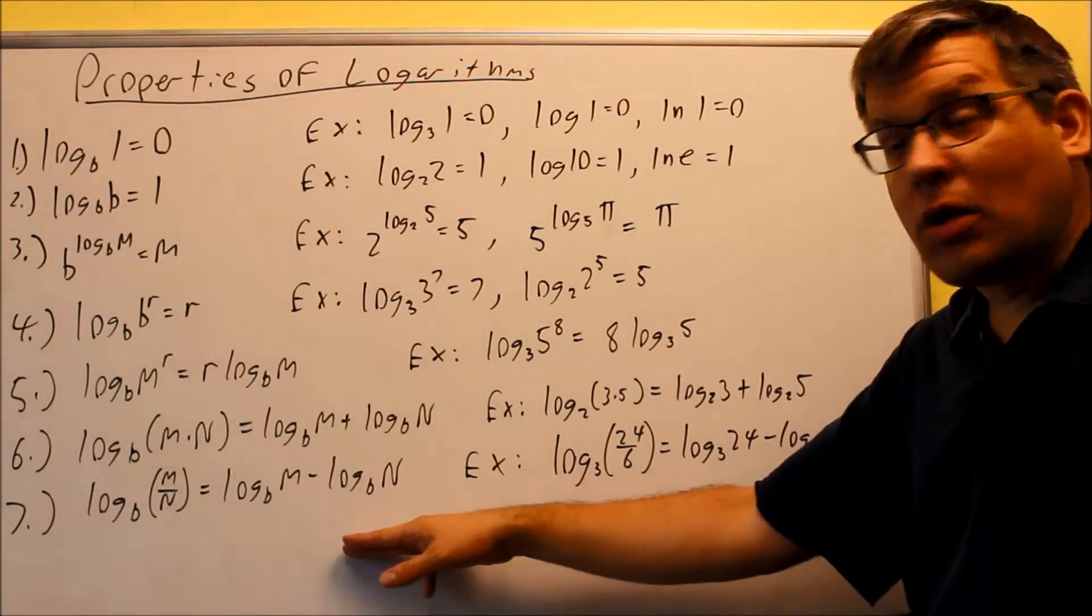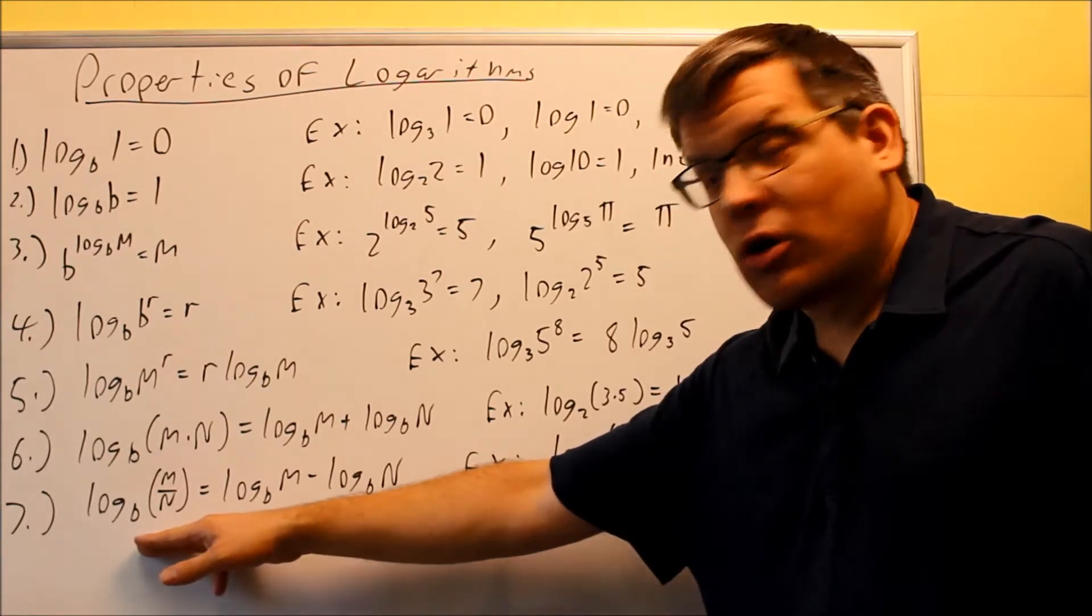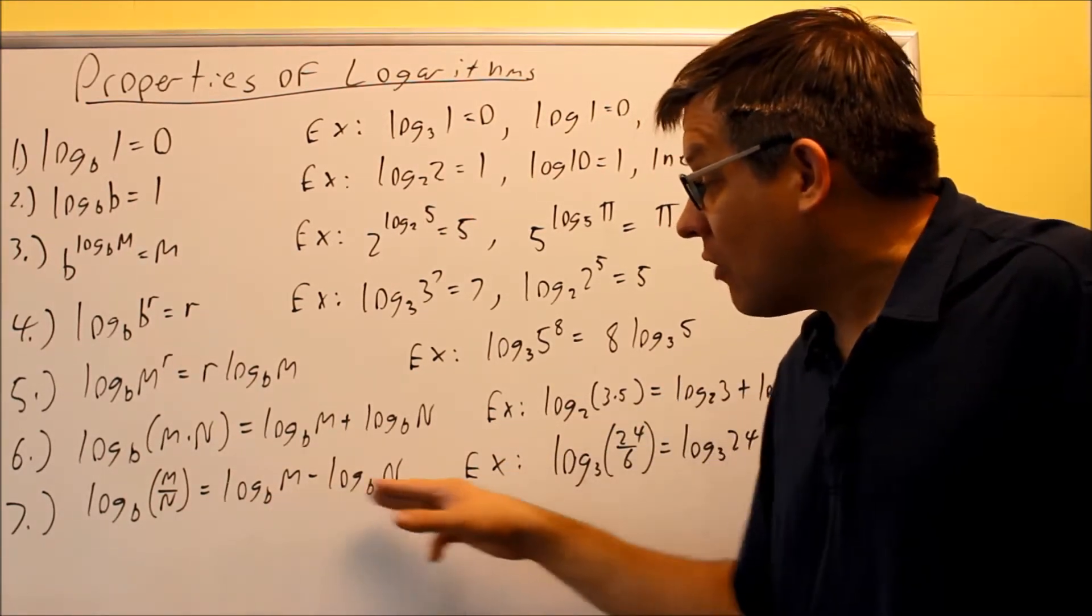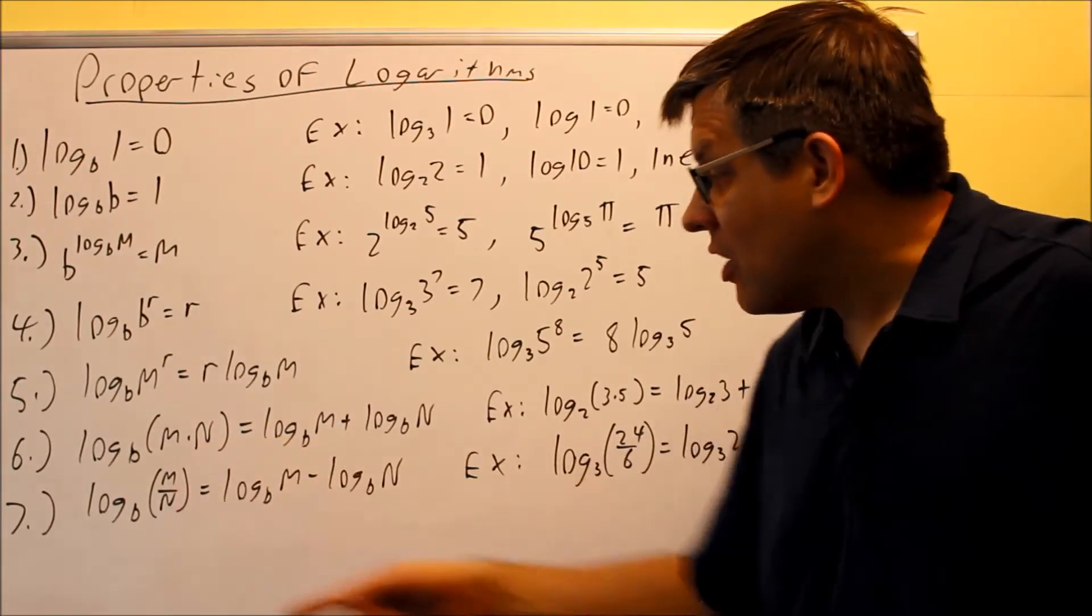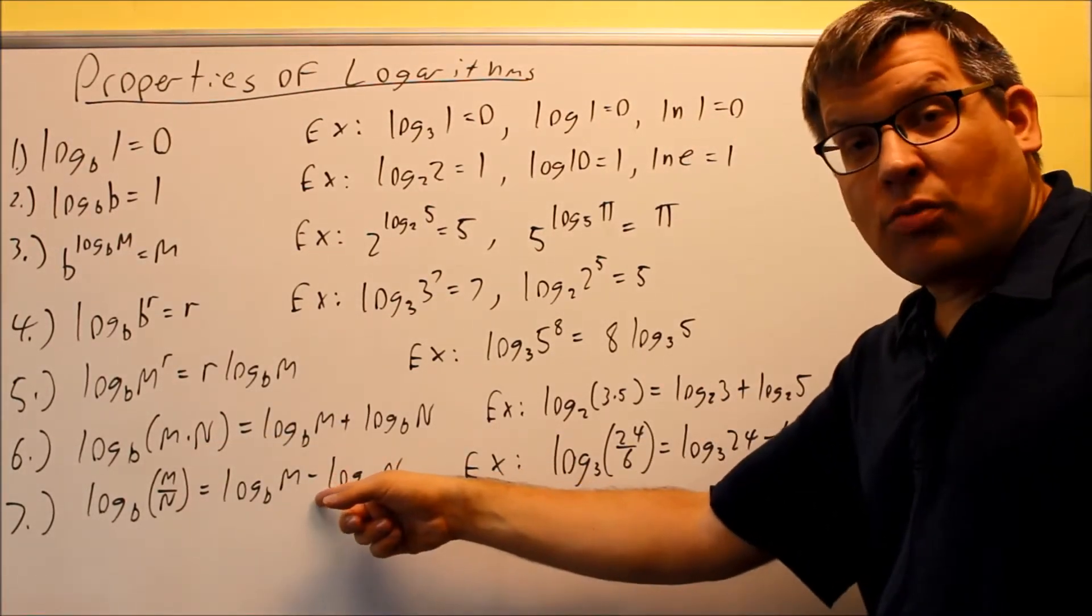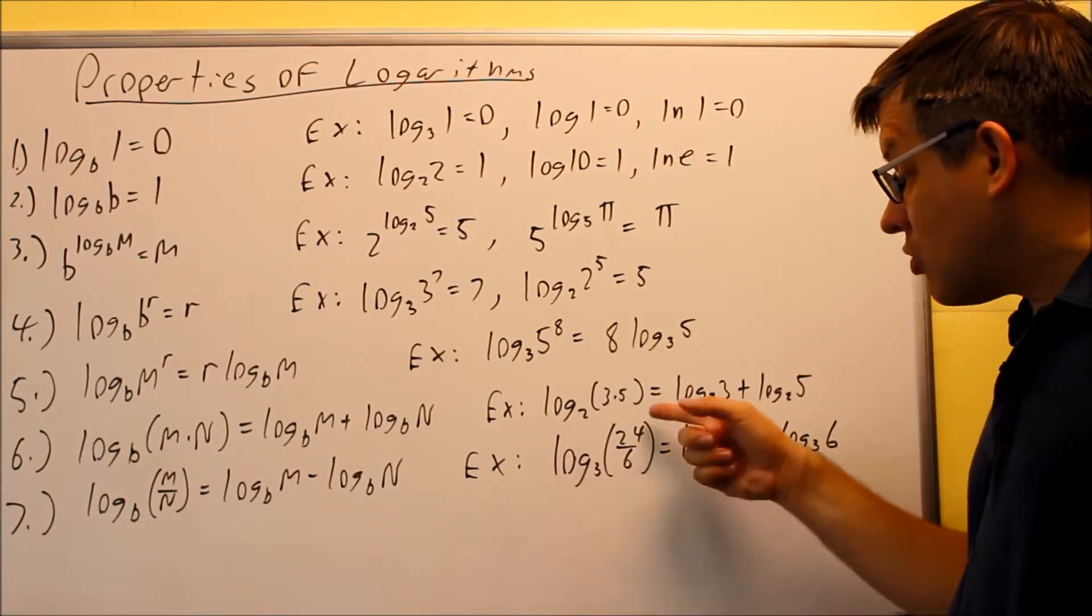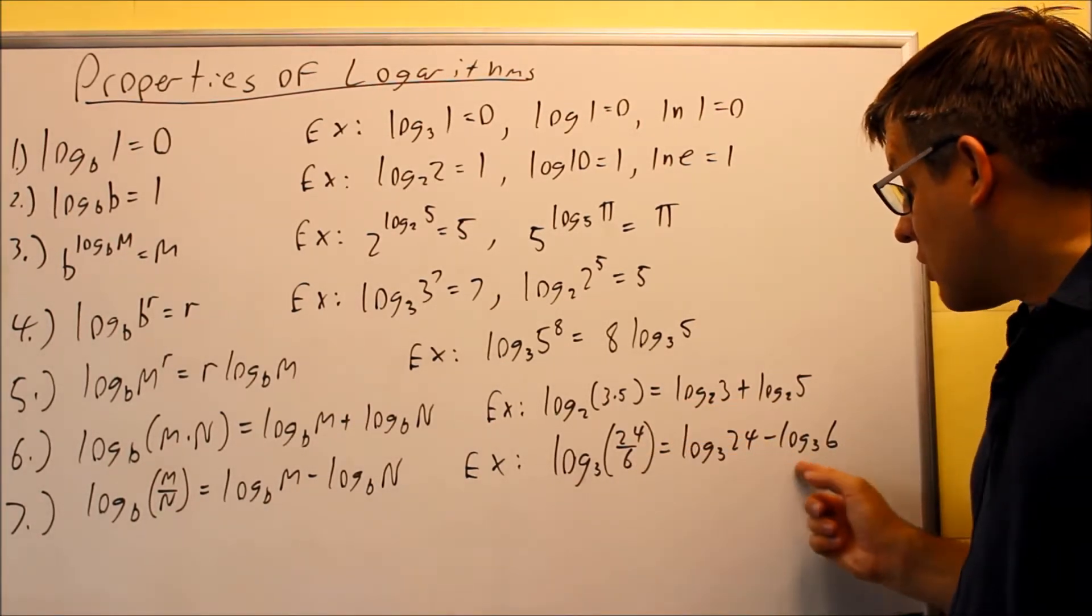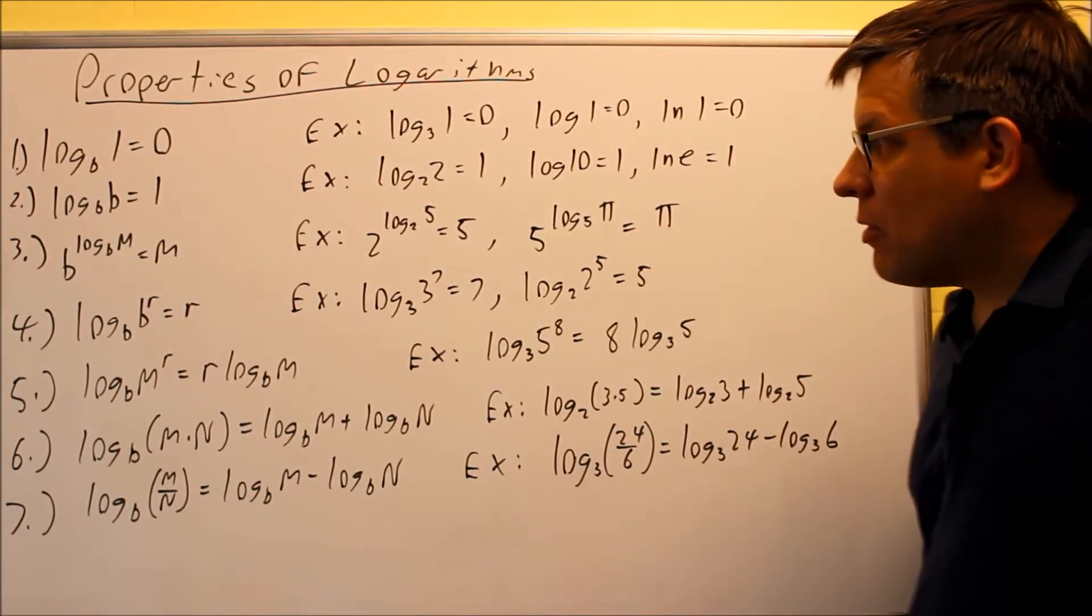Likewise, the same holds true for property 7. Having it together might be more complicated, but with logs separated, calculus operations are easier. So if you have division, you break up the logs and it turns into subtraction. For example, log base 3 of (24/6) turns into log base 3 of 24 minus log base 3 of 6.